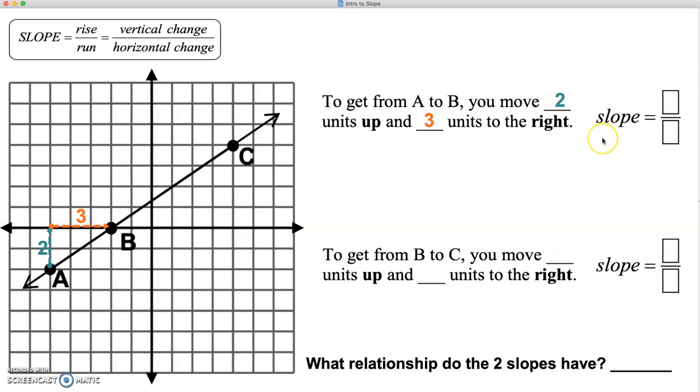If we calculate our slope to be rise over run, the amount that we rose was 2, the amount that we ran was 3, so our slope is 2 thirds.